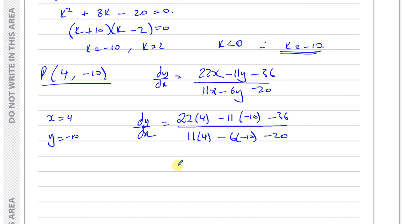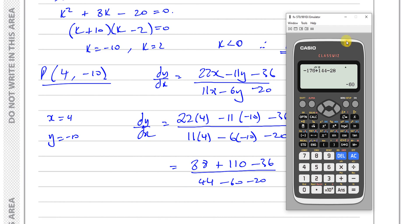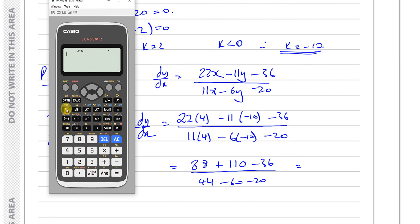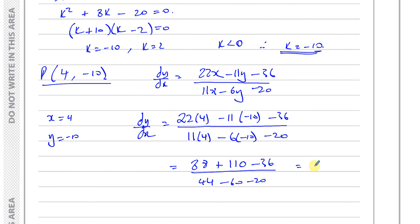That's going to give you (88 + 110 - 36)/(44 + 60 - 20), which is -9/2. So we can say the gradient at P is -9/2, and that's the answer.